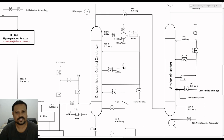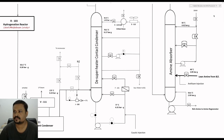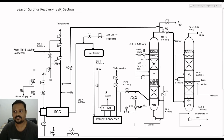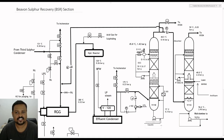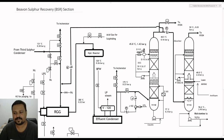The tail gas entering at the bottom of the lower packed section comes in direct contact with a circulating stream of water from the bottom circulation pump, and the gases are cooled to saturation conditions. The water circulation is maintained slightly alkaline by adding caustic solution to maintain a pH between 8 and 9. The reason is that if any sulfur dioxide breaks through the hydrogenation reactor it would cause corrosive conditions inside the DCC and the absorber and also degrade the amine. Maintaining the water solution slightly alkaline neutralizes any such sulfur dioxide breakthrough.